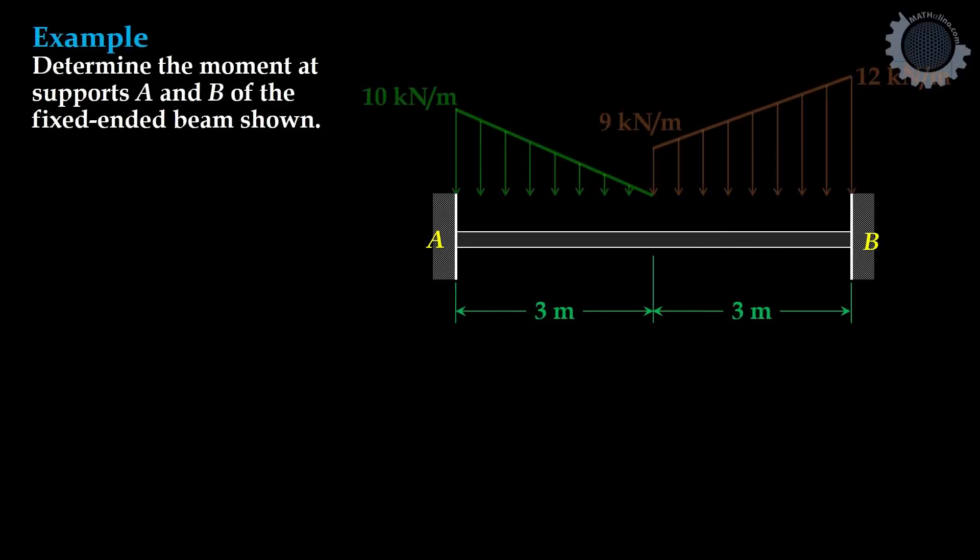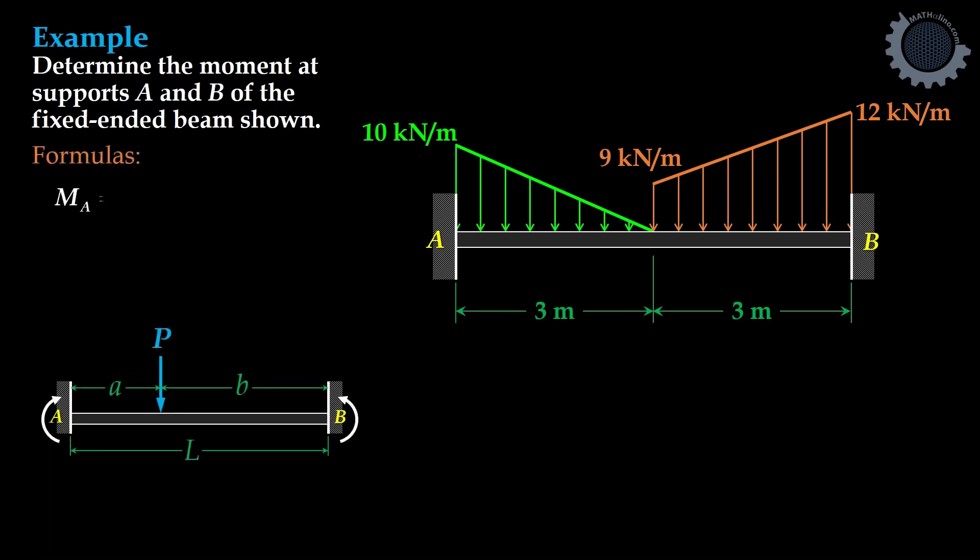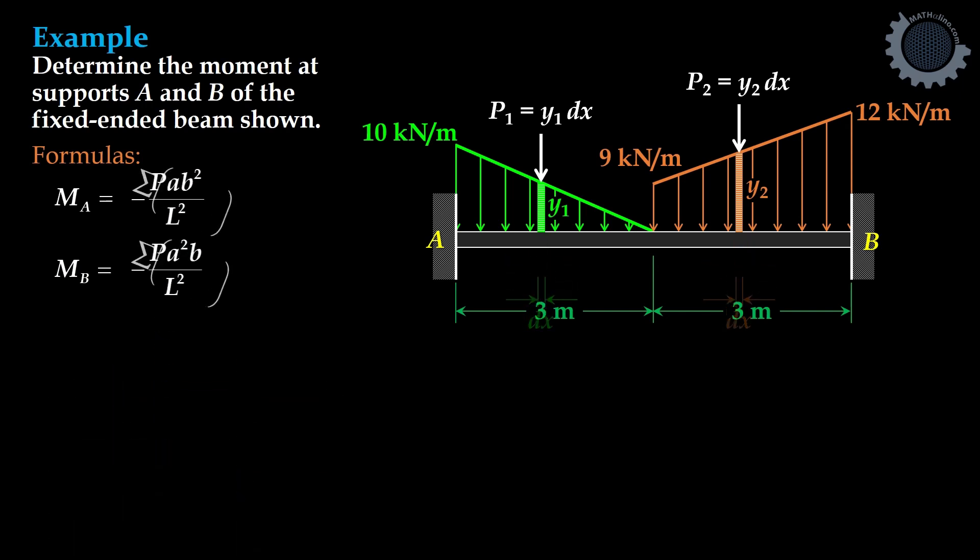Let us take this beam with triangular and trapezoidal load as an example. To solve it, we have these concentrated load formulas: moment at A and moment at B. Let us identify the value of our elements in the formula. This is our P. We have two values of P for triangular and trapezoidal, so we simply sum up their effect.